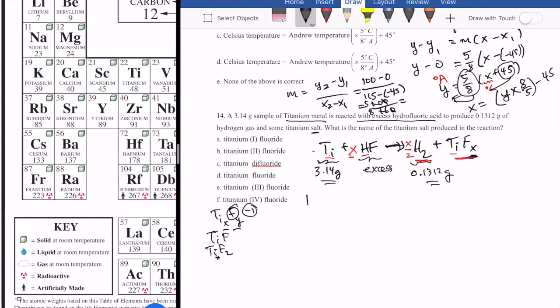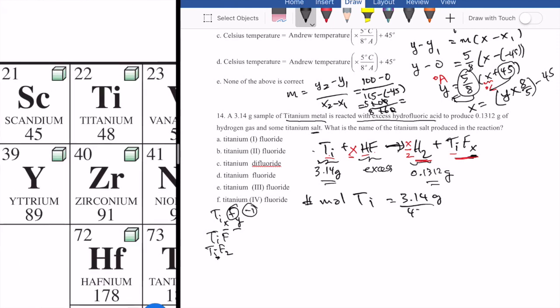You're given masses for both species. If you have mass, you can convert them to number of moles. Number of moles of Ti is 3.14 grams divided by its molar mass—Ti is 48 grams per mole—that ends up giving you 0.0654 moles.